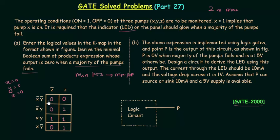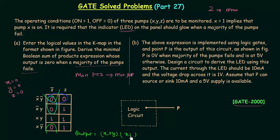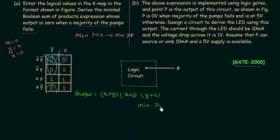Now I will obtain the minimal POS form by combining the zeros in the K-map. First I combine two zeros to get one group, then combine another two zeros, and the remaining zero forms a third group. When writing POS form from K-map, we invert the variables — x' becomes x, y' becomes y — and the AND operator changes to OR. The three groups give us: (x+y), (x+z), and (y+z). This is the minimal POS form.